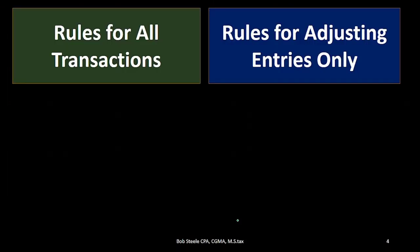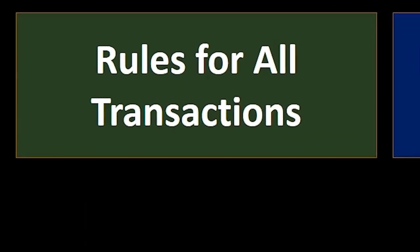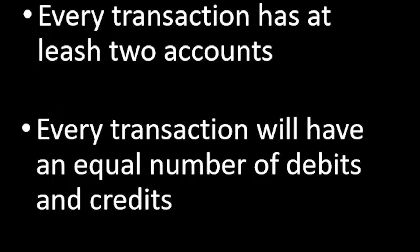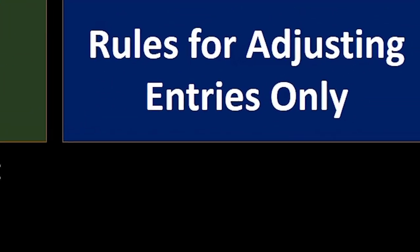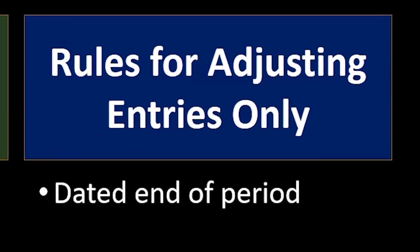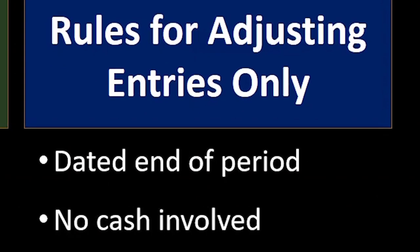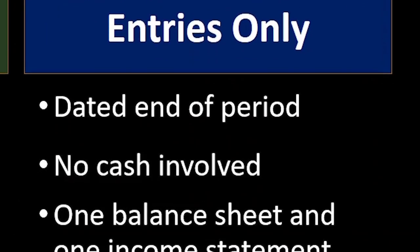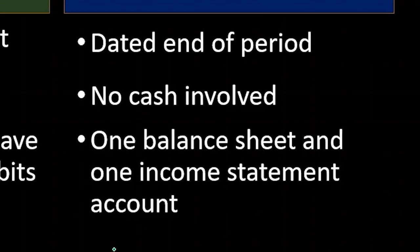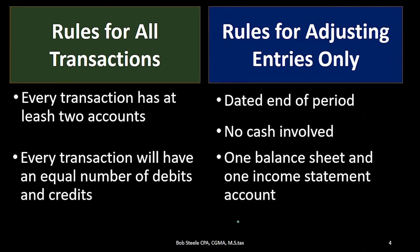So the rules recapped here: rules for all transactions, including adjusting journal entries — every transaction has at least two accounts affected, and every transaction will have an equal number of debits and credits. Rules for the adjusting entries only, which we want to keep separate in our minds: dated at the end of the period, no cash involved, one balance sheet account, and one income statement account.